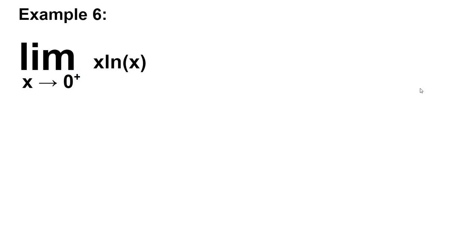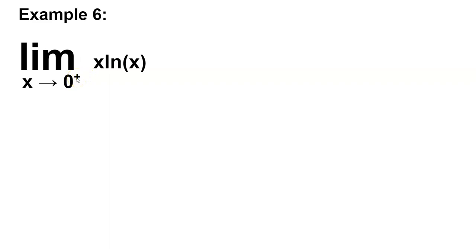Let's begin with example 6, which is technically continued from Part 1, but for this video it's example 1. We have the limit of x times natural log of x as x approaches 0 from the right side only. The superscript plus represents that we're approaching x to the value of 0 from the right side and only the right side.